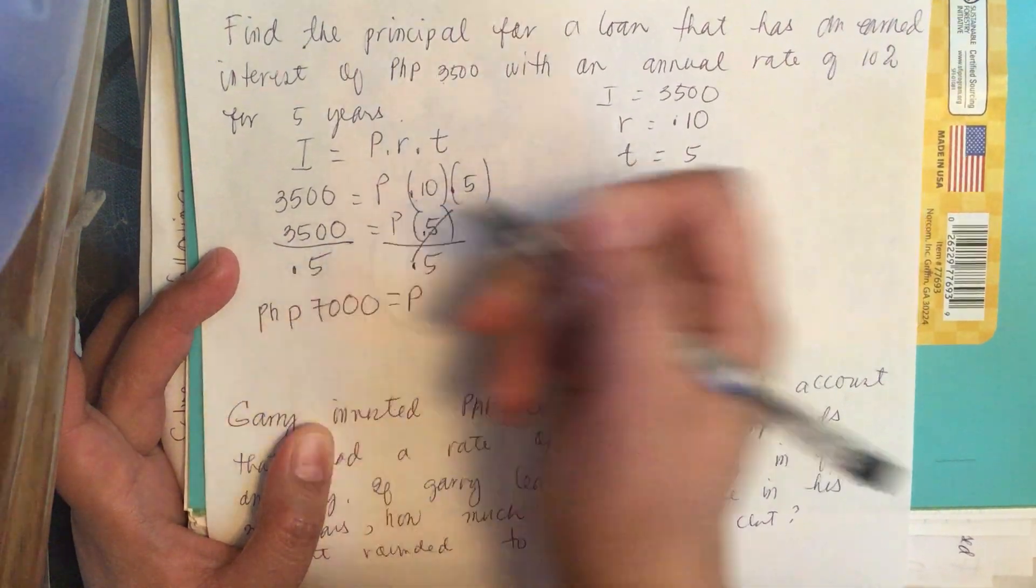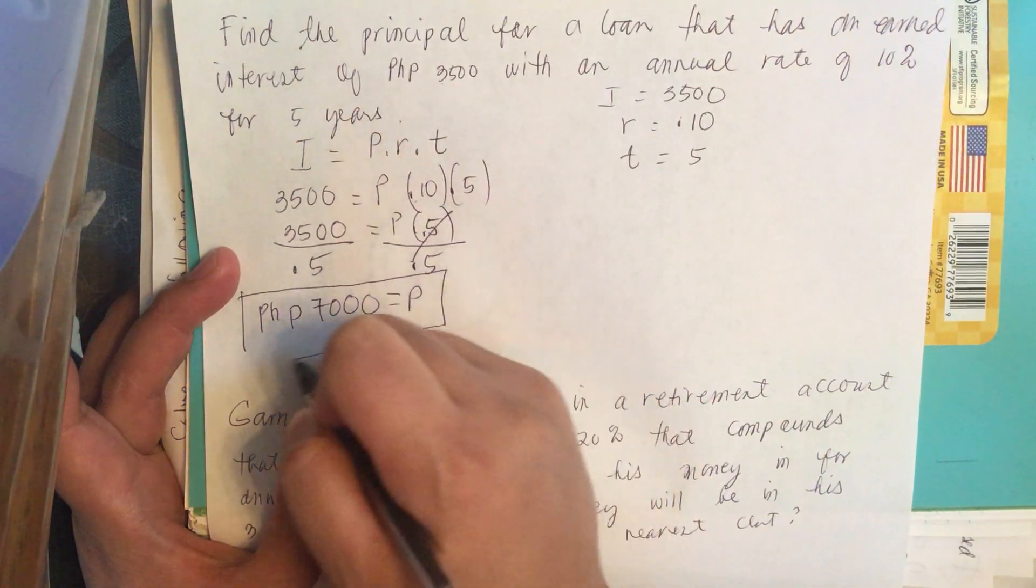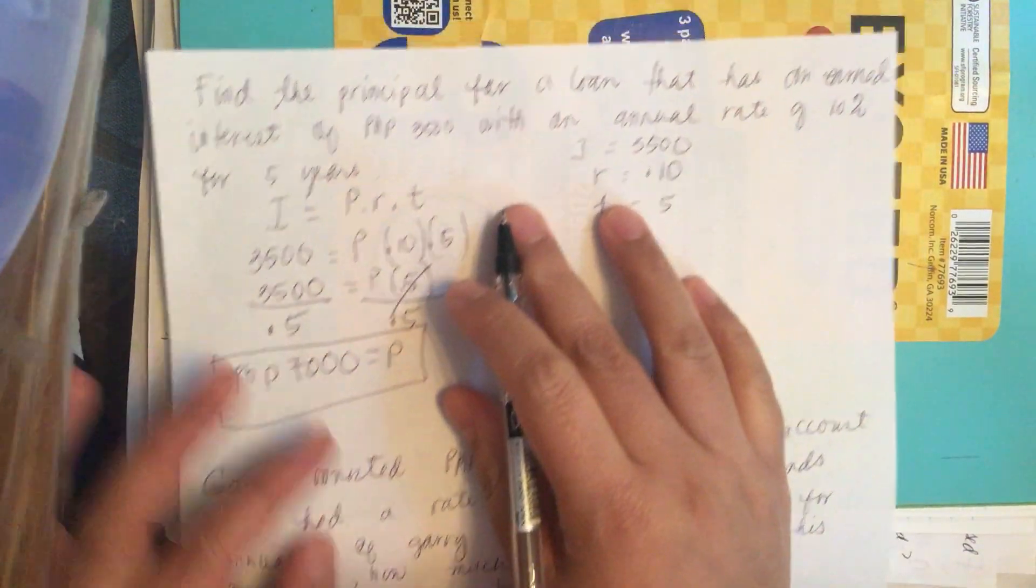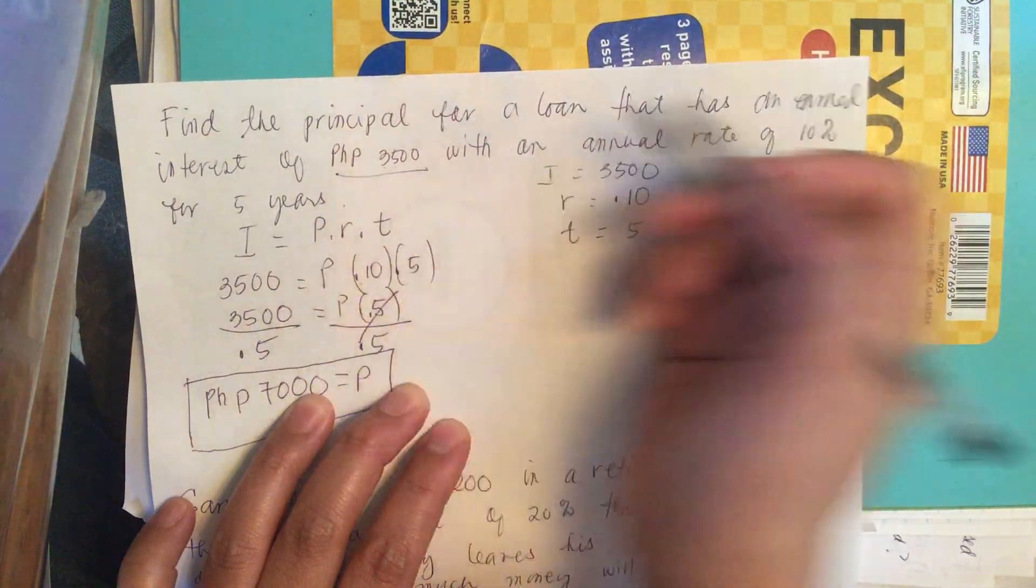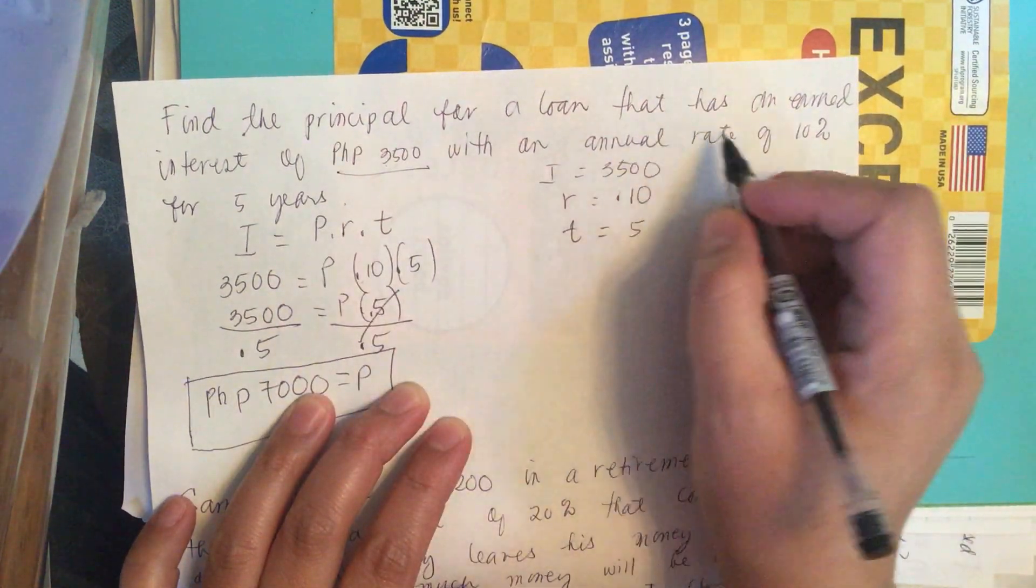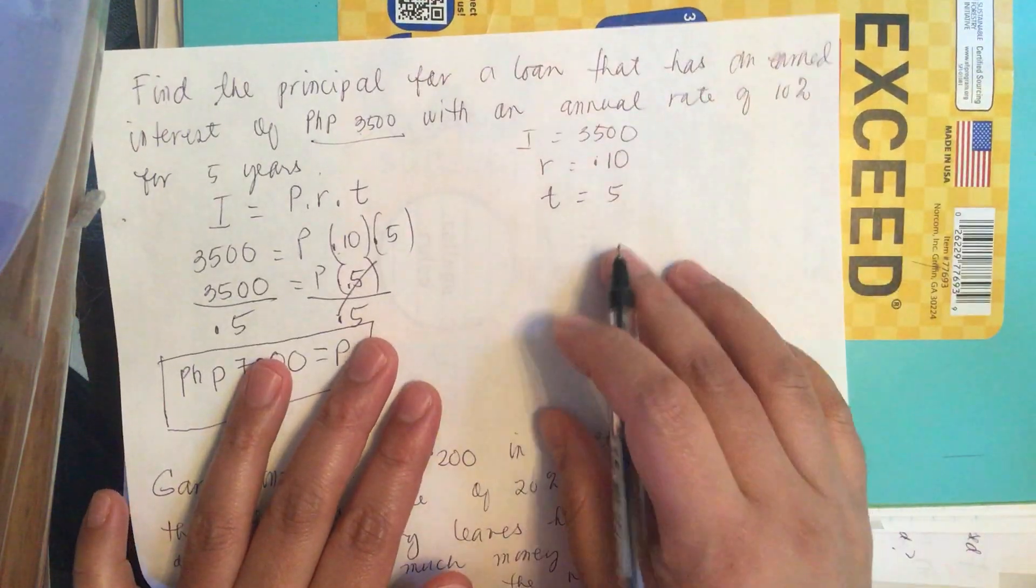So we have P is equal to 3,500 divided by 0.5 is equal to 7,000 pesos. So this is the principal invested to earn 3,500 in 5 years with an interest rate of 10%.